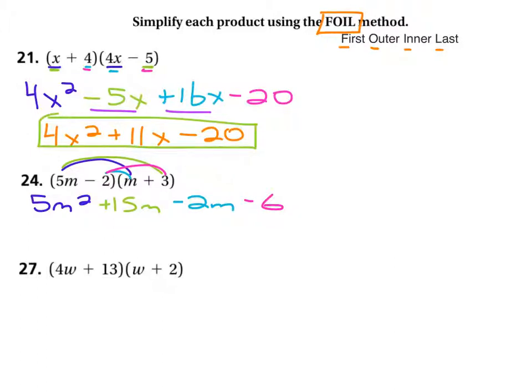And then again, you have to identify what are the like terms. These are the like terms. And so we are going to combine them. 5m squared. The 15 and the negative 2 becomes positive 13m. And then minus 6. That is your answer.